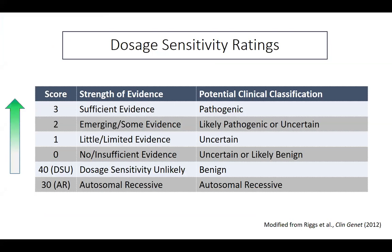In the dosage sensitivity curation group, we use a numerical score to rate the strength of evidence associated with dosage sensitivity. A score of 3 is the highest level of evidence linking a gene or region to a clinical phenotype through deletion or duplication, corresponding to sufficient evidence for dosage sensitivity. A score of 2 indicates emerging evidence; 1 indicates little or limited information; and 0 indicates no evidence or currently insufficient evidence. The 'dosage sensitivity unlikely' category indicates genes and regions for which there is evidence refuting dosage sensitivity. We also have a ranking applied to recessive disease genes.